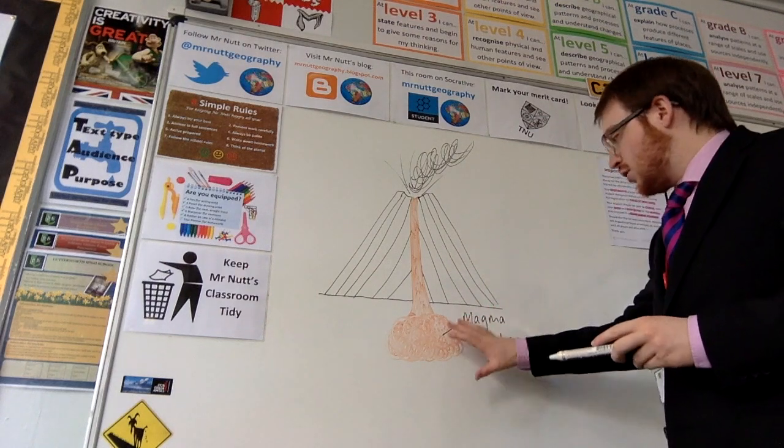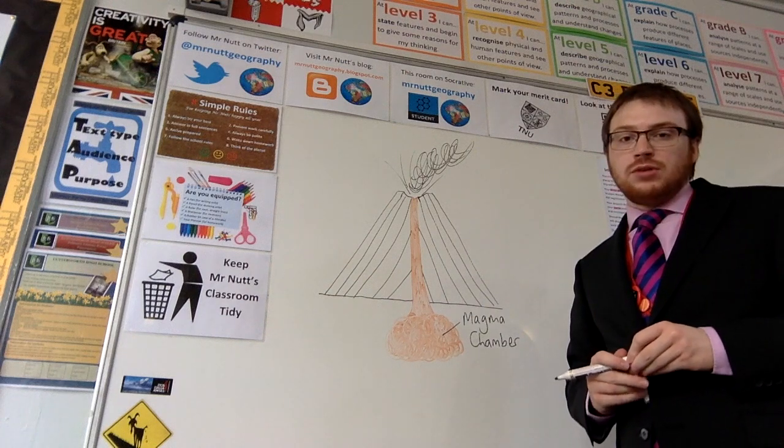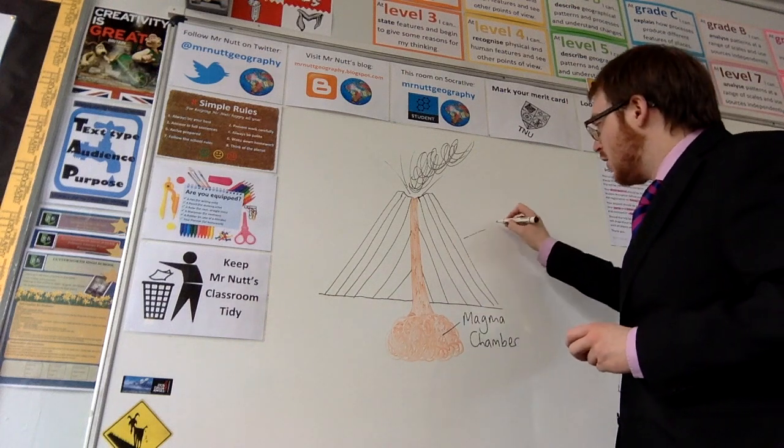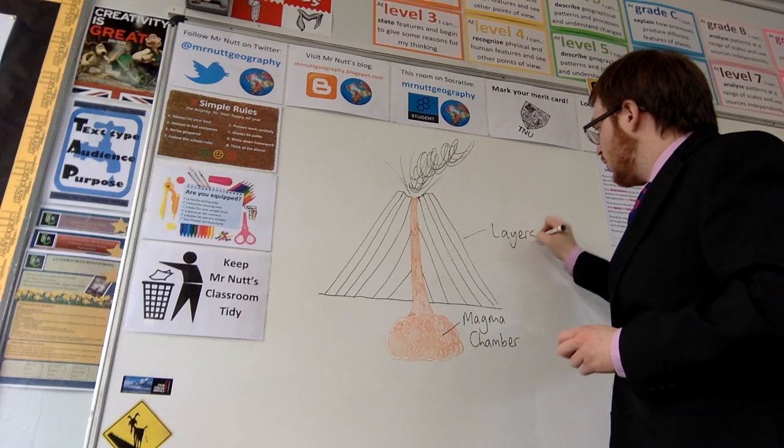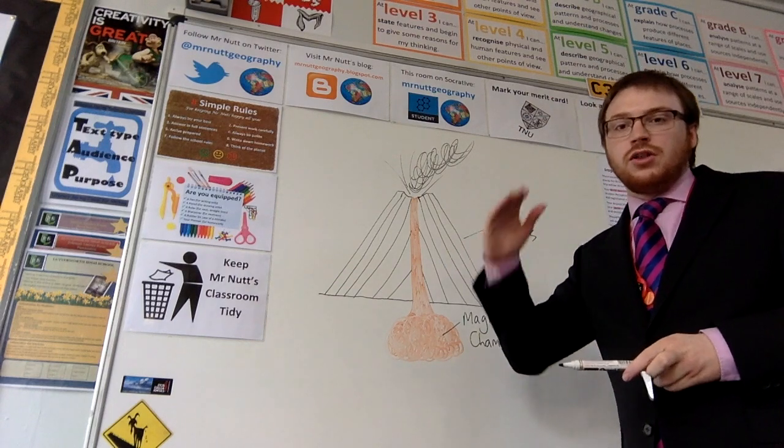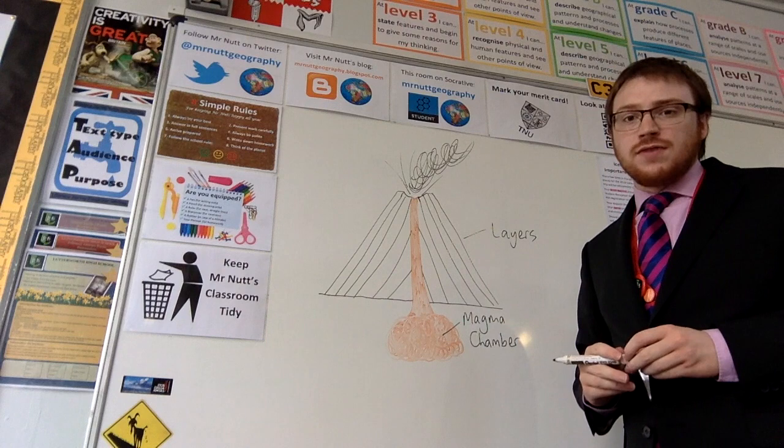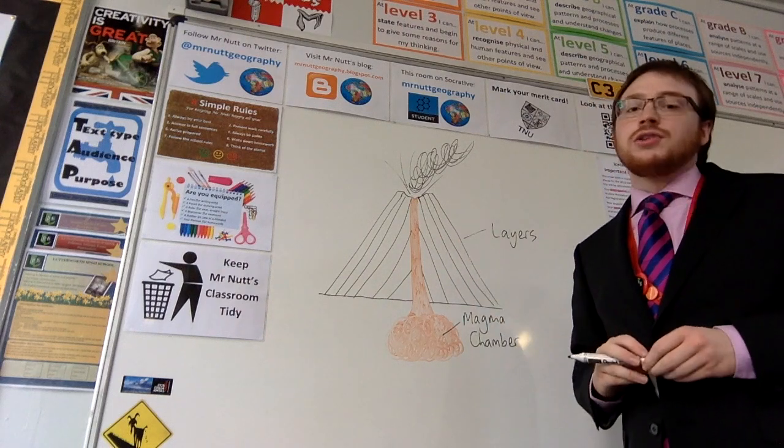The main features, firstly the magma chamber which I've already labelled, and then the layers of matter which are built up from subsequent eruptions, one after the other, so we can date these volcanoes very easily by looking at the strata in the rock.